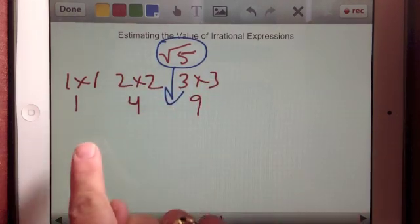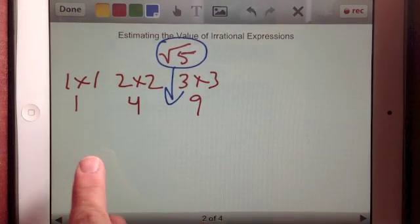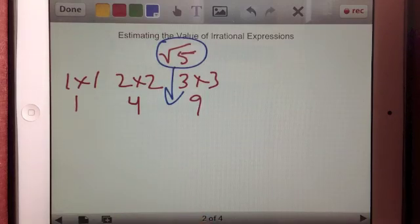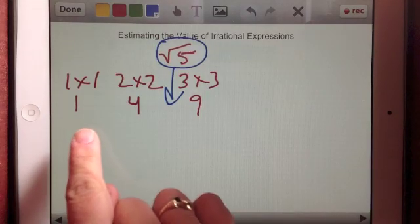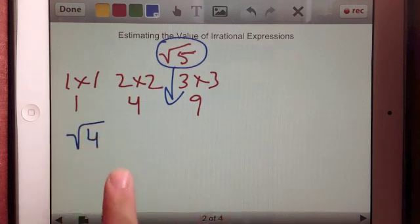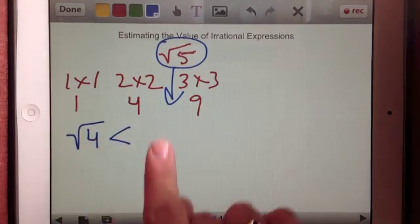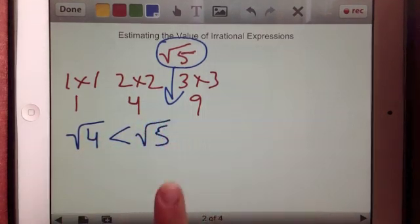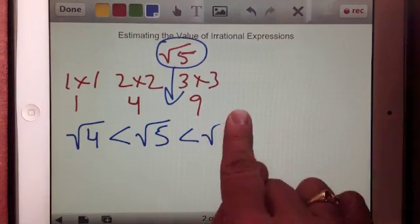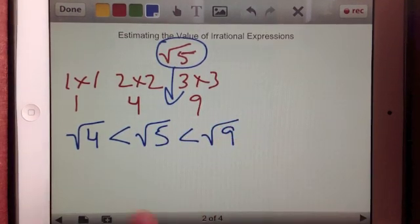So let's write that comparison statement so we can be clear about what is the estimated value of square root of 5. If we have square root of 4, we know that's less than square root of 5, which we know is less than square root of 9. When I go to simplify this,